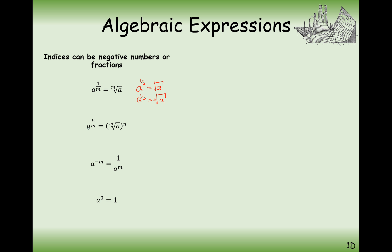When we have a to the power of n over m, we first do the mth root of a and then we raise that value to the power. For example, if we've got a to the power of two thirds, we cube root the a first, and then whatever answer we get to that, we square it because that's the numerator. The denominator gives us the root.